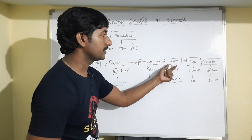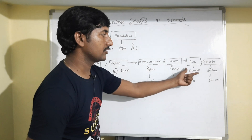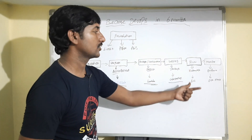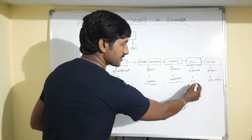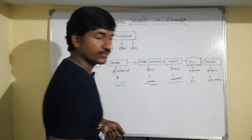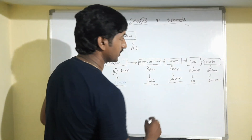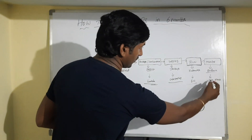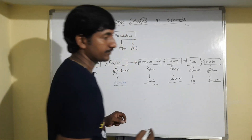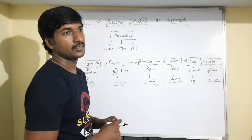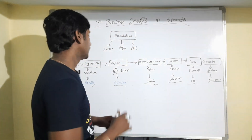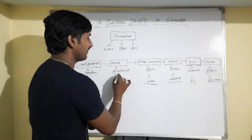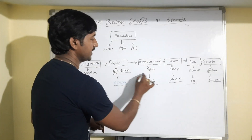After deployment tools, the fifth part is container orchestration — learn Kubernetes or ECS. The sixth part is monitoring tools — learn Grafana or the ELK Stack. These are the most used DevOps tools in the industry today.